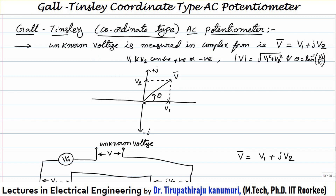For example, if you take any phasor value V making an angle theta with respect to the reference axis, this voltage can be resolved into two components: one on the real axis (V1) and one on the imaginary axis (V2). Because this phasor can rotate by 360 degrees, V1 and V2 can be positive or negative depending on the quadrant. If theta is 0–90°, both are positive; 90–180°, V1 is negative and V2 positive; in the third quadrant both are negative; in the fourth quadrant V2 is negative and V1 is positive.